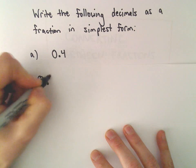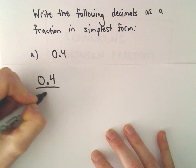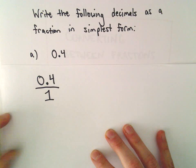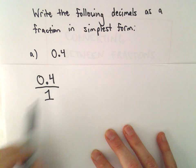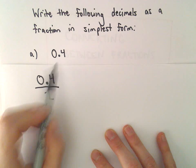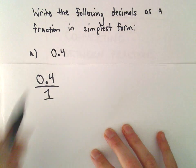The first thing I do is just always put everything over 1. I mean, you can write any number by dividing it by 1. 0.4 divided by 1 is certainly still 0.4.